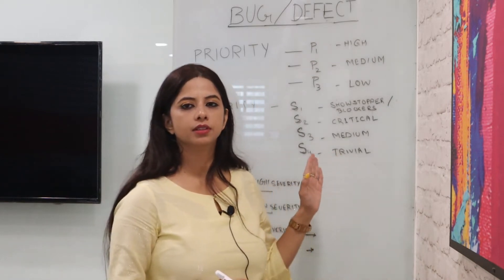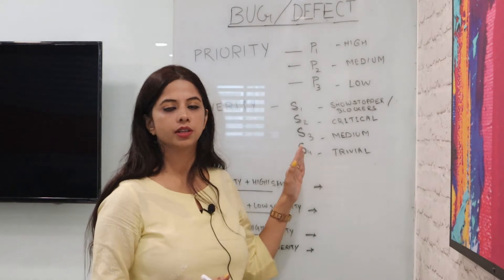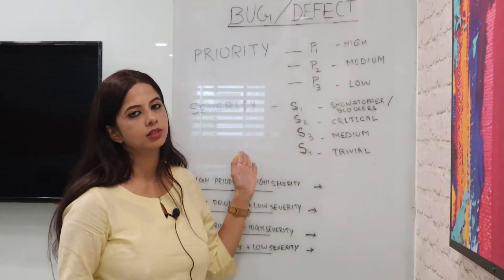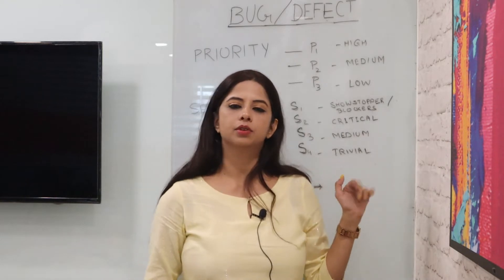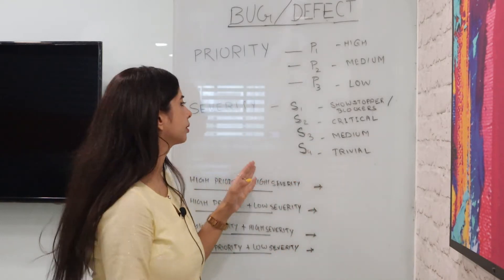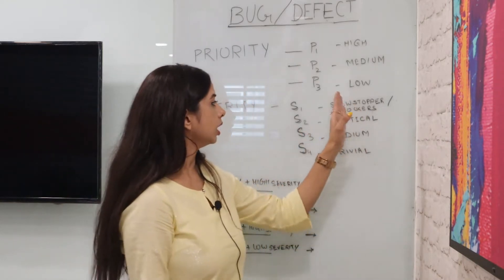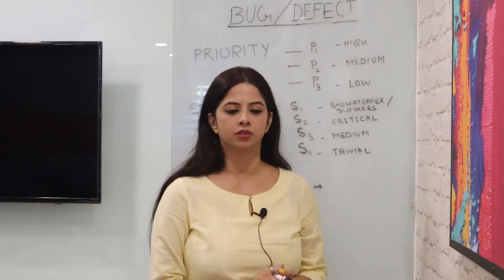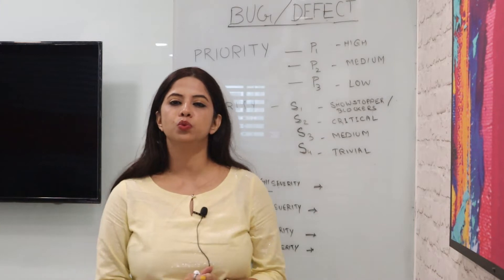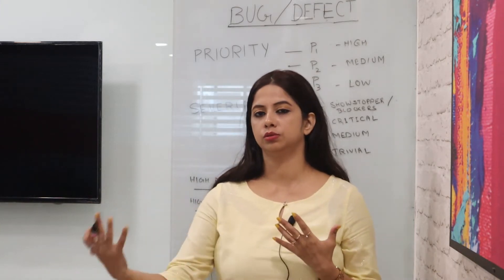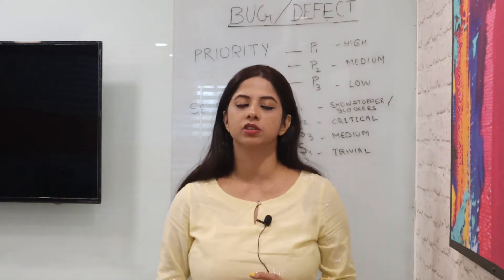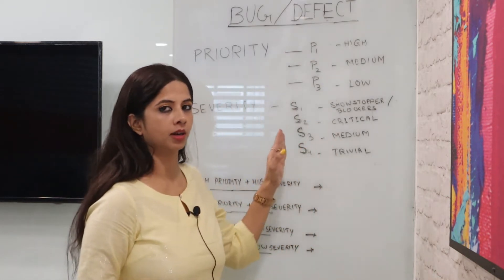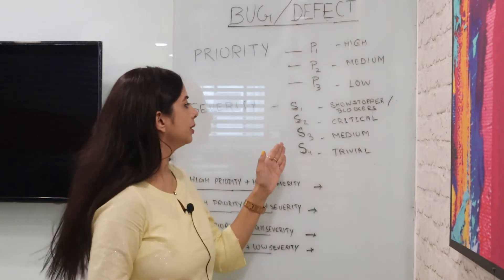We have different levels of severity: S1, S2, S3 — the nomenclature can change from project to project and from admin to admin. S1 severity indicates it's a showstopper or a blocker. Bugs or defects which don't allow a user to move forward in the application, or which are blocking the business flow, should be marked as S1 issues.